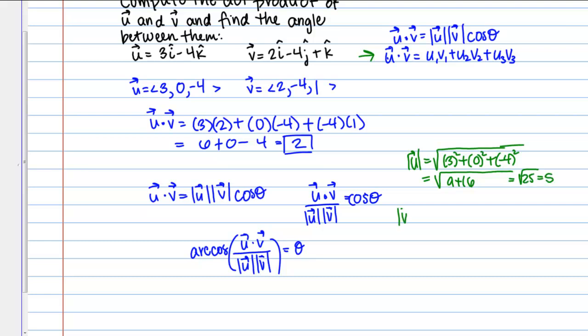And then magnitude of v is the square root of 2 squared plus negative 4 squared plus 1 squared. So that's the square root of 4 plus 16 plus 1. So square root of 21.